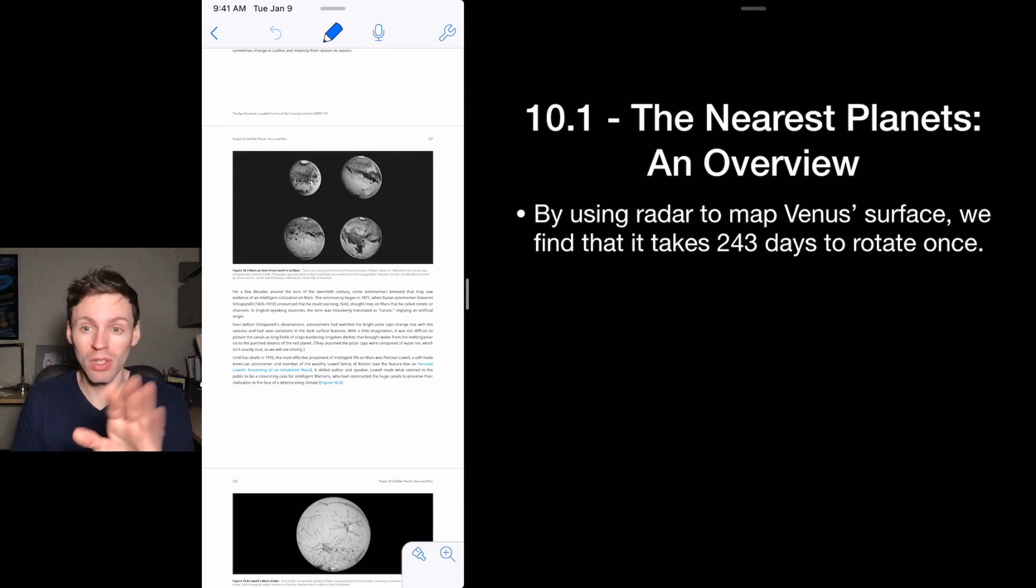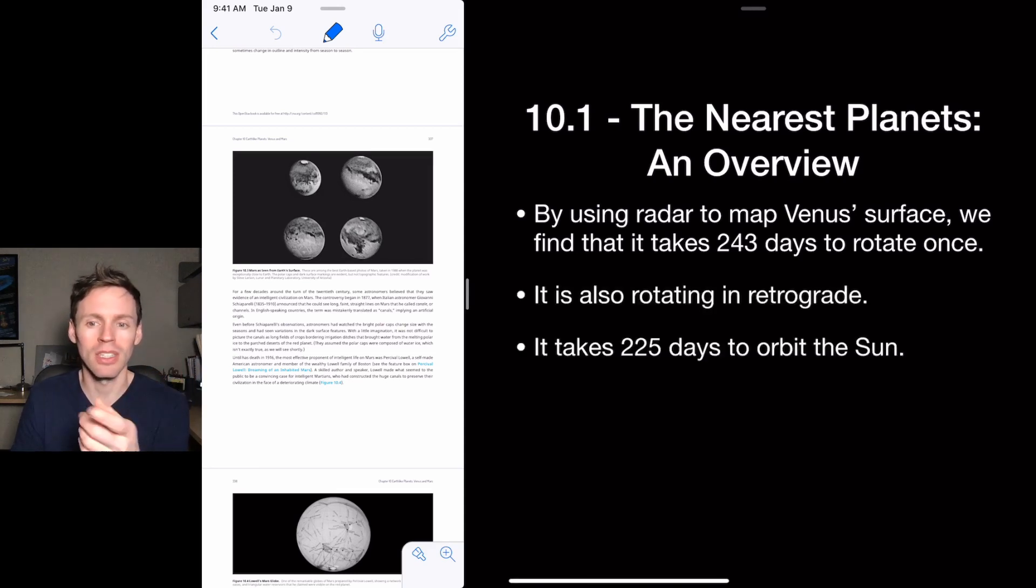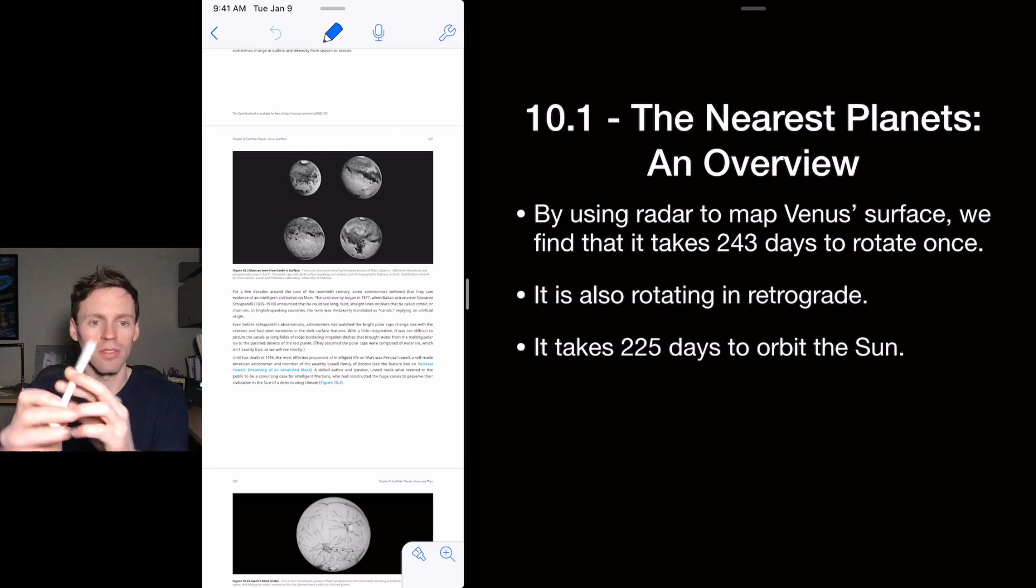We can use radar in order to see through the clouds of Venus's surface, and we see that it rotates very slowly. It takes 243 days to rotate. It's rotating in retrograde, which means it goes backwards. It's rotating backwards compared to its orbit. So if it is coming towards you right now, it would rotate in the same direction, but in this case, as it comes towards you, it's rotating in the opposite direction. I can't really show you. It just rotates backwards.